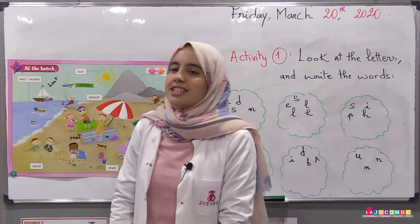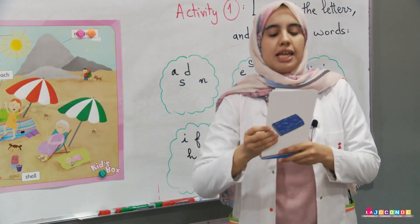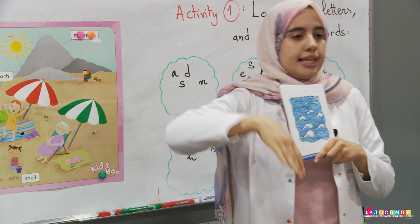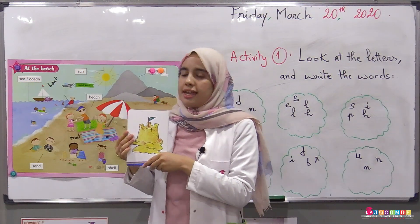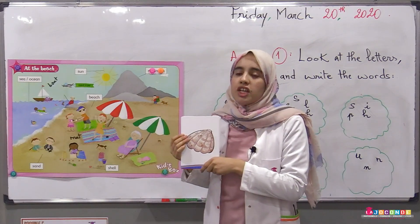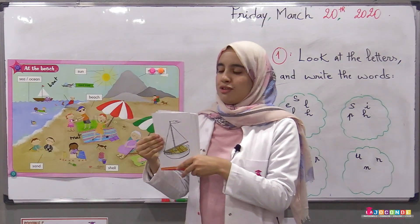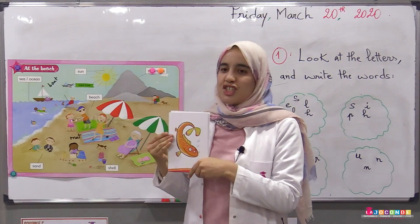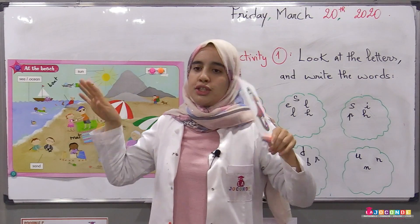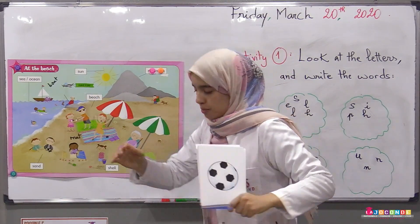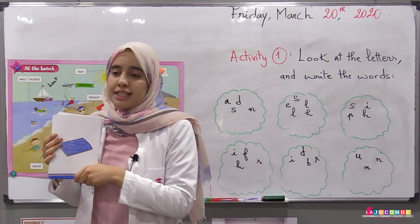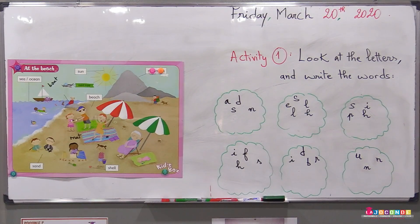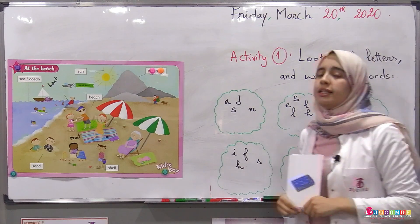We can also find a ball and a mat — a mat where we can have a rest. Now let's repeat again: beach, sea, sand, shell, boat, sun, fish, bird, ball, and mat. Great!